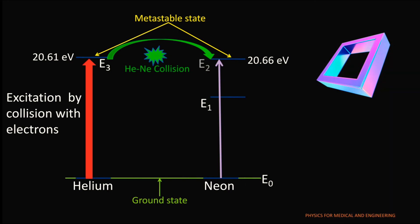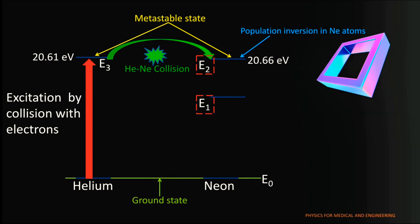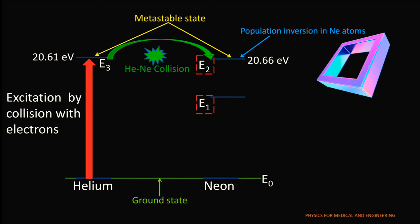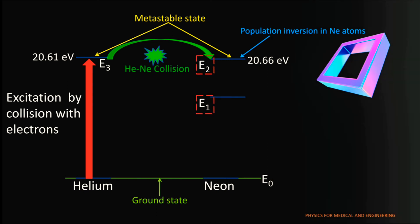When a sufficient number of neon atoms reach to this state E2, then population inversion occurs in this state. In this manner, neon level E2 can become heavily populated than neon level E1.